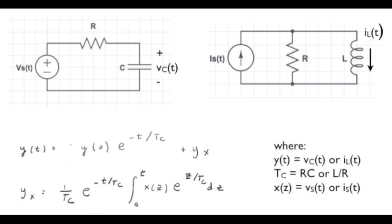The second term depended on the functional form of the sources of electrical energy, either v_s or i_s, and involves carrying out an integral in which the source term x(t) is part of the integrand. In this lesson, we will consider that x(t) — either a voltage source input or a current source input — to be a step function in terms of the nature of its time variation.